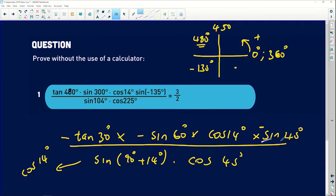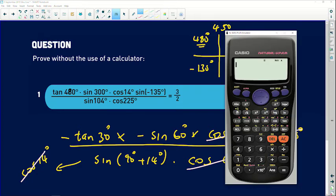Now you need to know this by now: that sin 45° is the same as cos 45°. Now this one, sin(90° + 14°), is going to produce cos 14°. So cos 14° is going to be the same as cos 14°. You'll be left with sin 60° and tan 30°. If you go to your calculator and you press tan 30°, right...